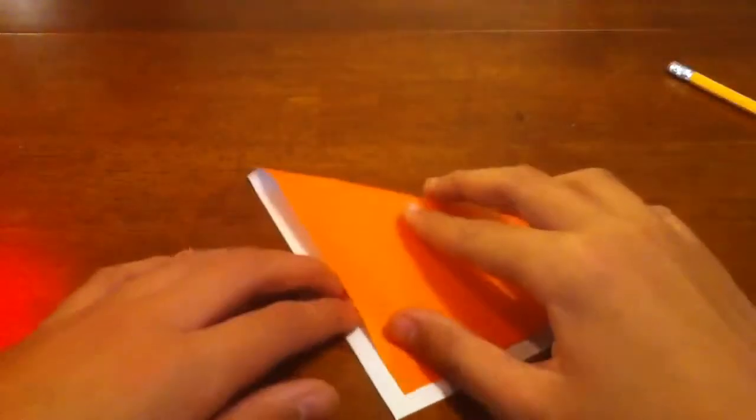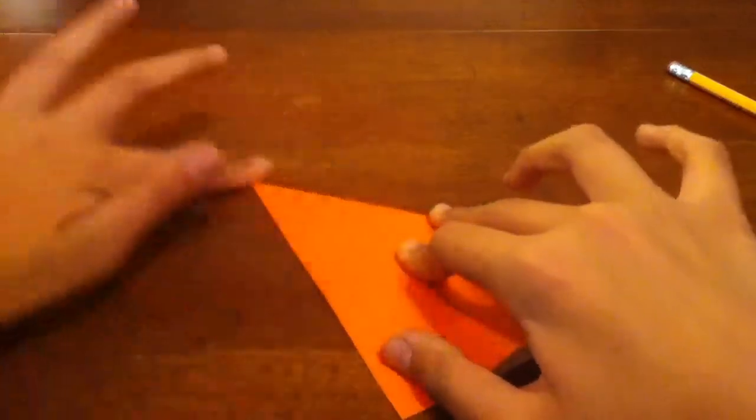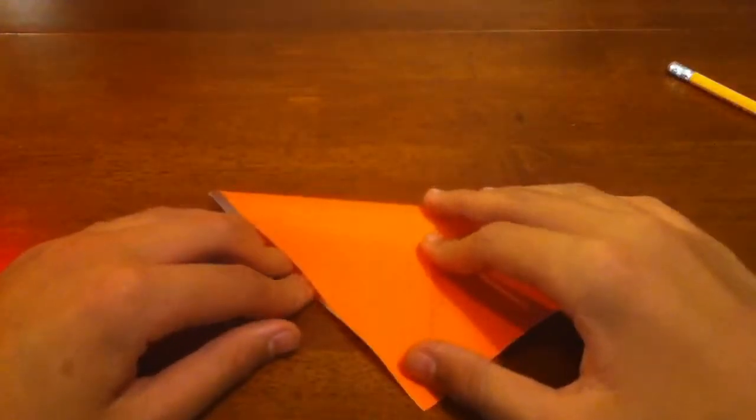I need one square sheet of paper. For this it's better to use a paper with color on both sides. I'll be using this one instead.